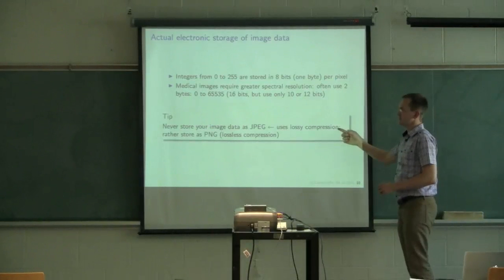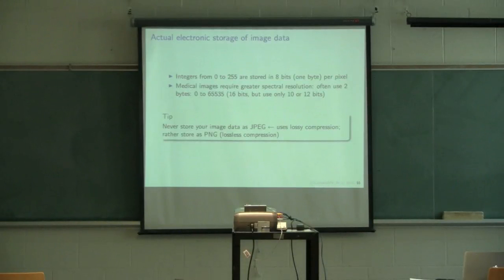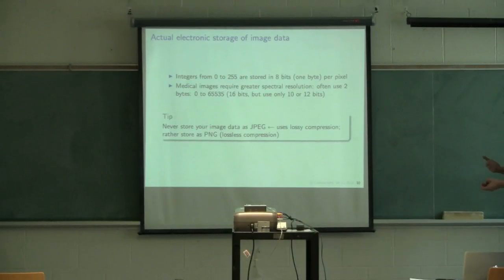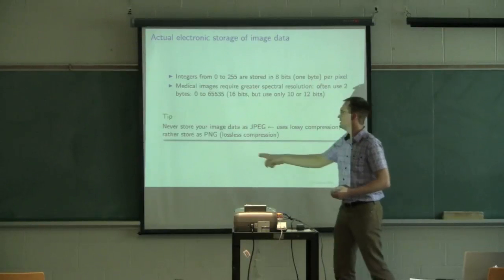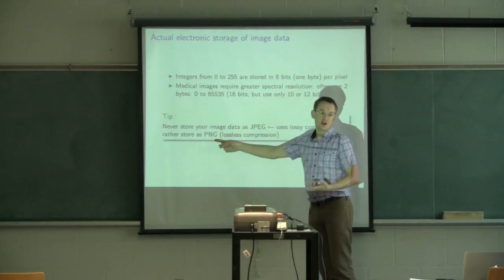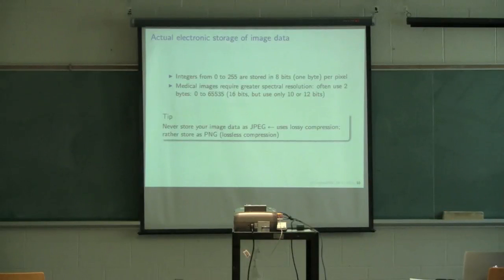An important tip: if you store images as JPEG, you're throwing away information — JPEG is a lossy compression algorithm that discards higher spectral frequencies. If you store as PNG or BMP, you get lossless compression. PNG zips images losslessly, while BMP stores the full image without compression. Stick to PNG or BMP and never use a lossy format like JPEG, because you're discarding information.